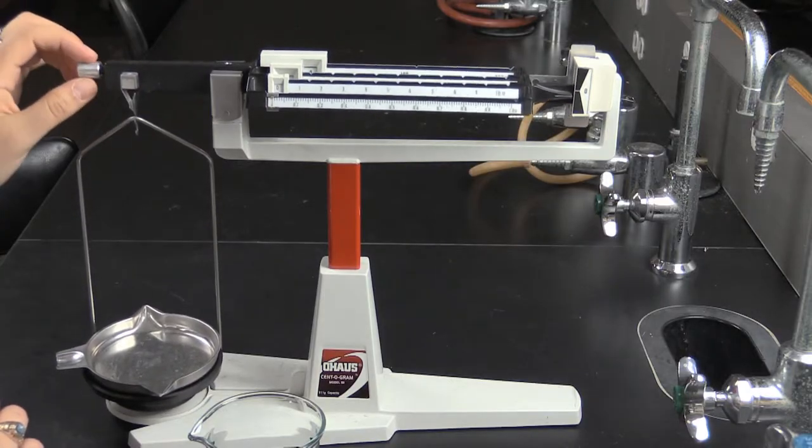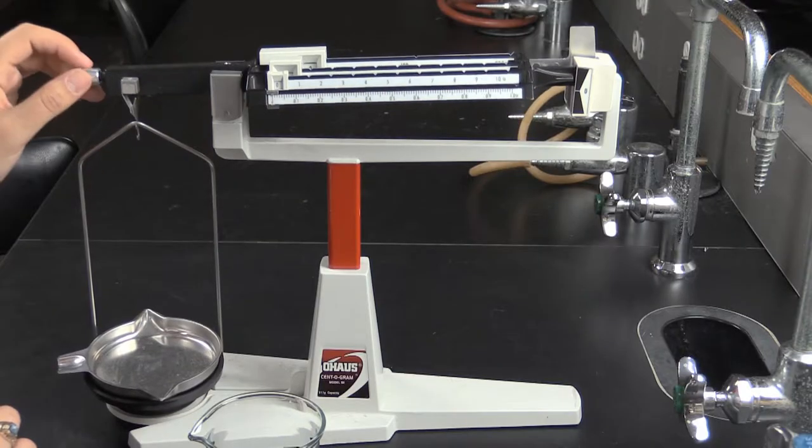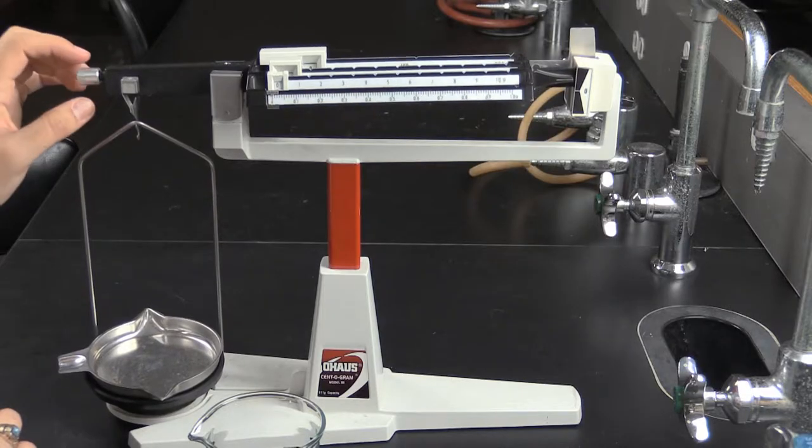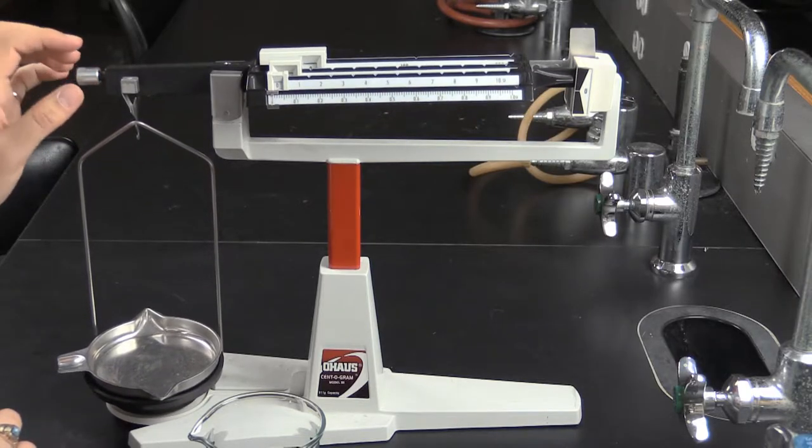Once in this position, the knurled nut on the left side of the beam is loosened or tightened until the beam line on the right lines up with the line on the fixed portion of the balance.